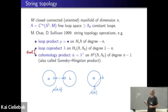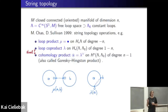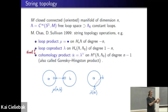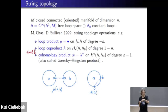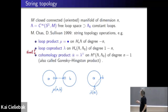One subtlety: the loop coproduct is not defined on the homology of Λ but only on the homology of Λ relative to the constant loops. To make it well-defined you need transversality of the evaluation at time zero and at time t. If t itself equals zero, it's never transverse. One way around this is to mod out the constant loops — then relative to the constant loops, it is indeed well-defined. So the coproduct λ is only on the relative homology relative to Λ₀, the space of constant loops.